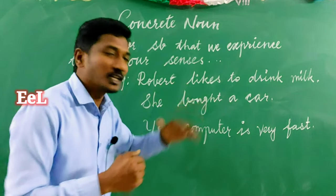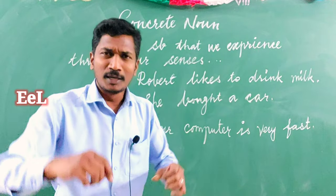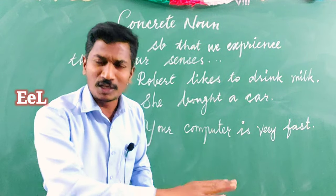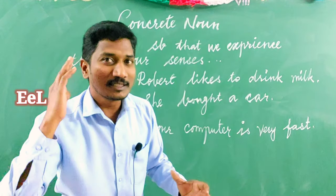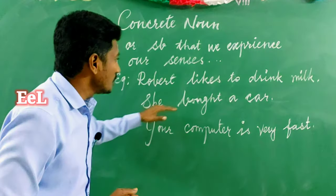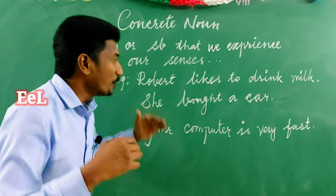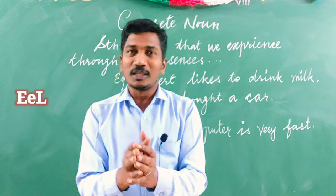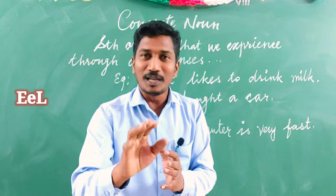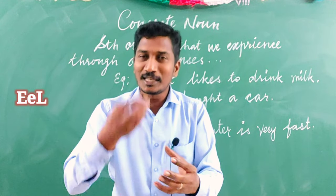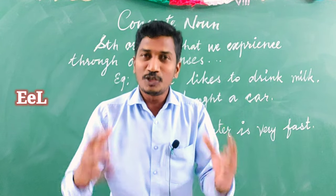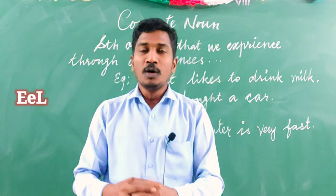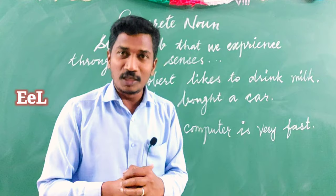Next: she bought a car. You can drive a car, you can see a car, you can touch the car, you can hear the sound of the car — so that is a concrete noun. Next: your computer is very fast. Computer is concrete — it can be touched. Food can be touched, it can be eaten. A chair, a table, a house, a tree, a cow — these are all called concrete nouns.